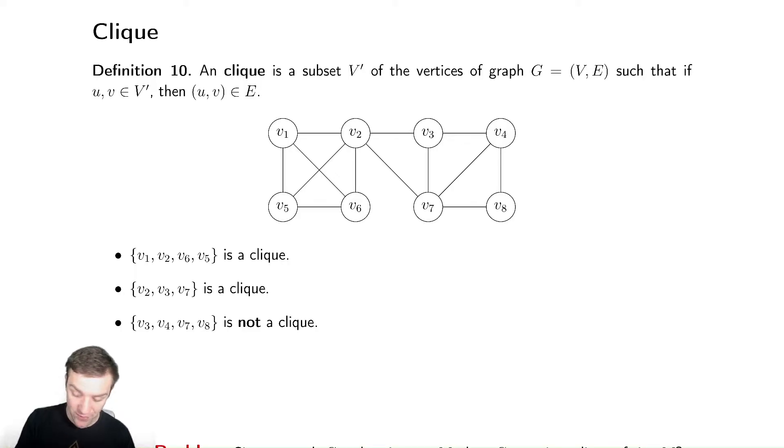A clique is a subset of a graph's vertices such that every single pair of vertices in that set are connected.